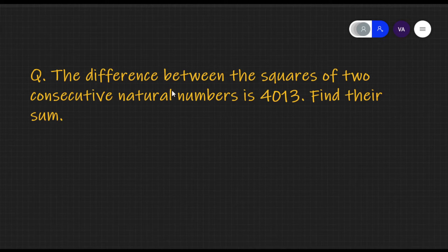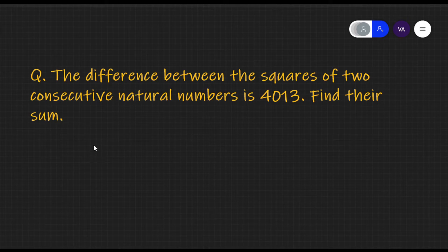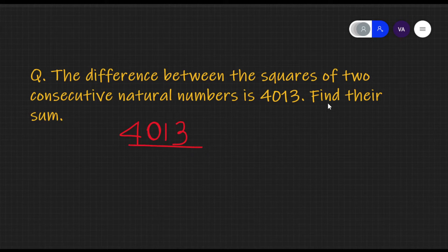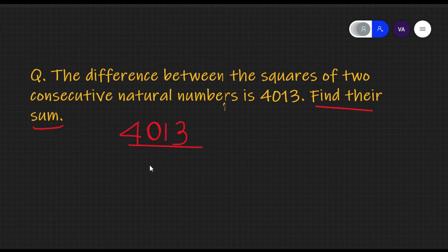Based on this fact, consider the question: the difference between the squares of two consecutive natural numbers is 4013 — find their sum. Since the sum of consecutive numbers always equals the difference between their squares, you directly write that the answer is 4013, because they asked for the sum, not the individual numbers.